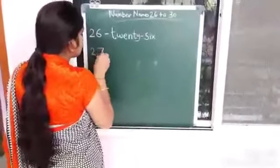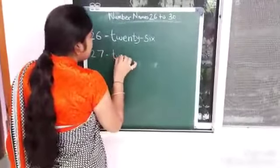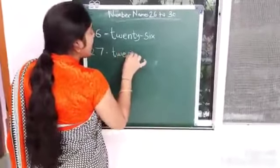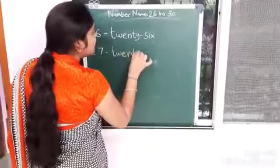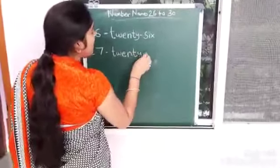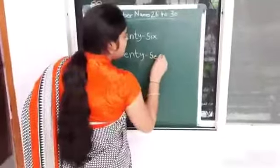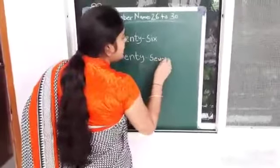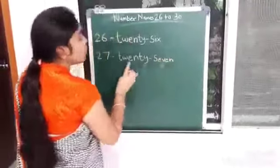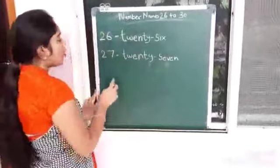27. T-W-E-N-T-Y S-E-V-E-N. Twenty Seven. 7, 27, okay?